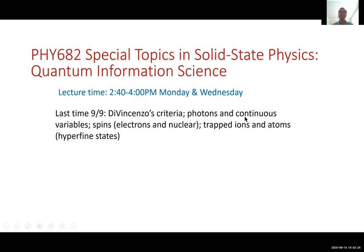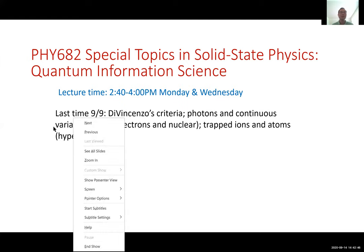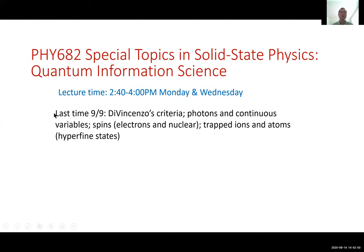We started with photons — polarization, time-bin, path encoding, and then continuous variable systems using lasers in coherent states and cat states that are superpositions of coherent states. Then we talked about spins, including electron spins and nuclear spins, NV centers in diamond, trapped ions, and atoms, where I introduced the hyperfine states. Any questions on any of these subjects?